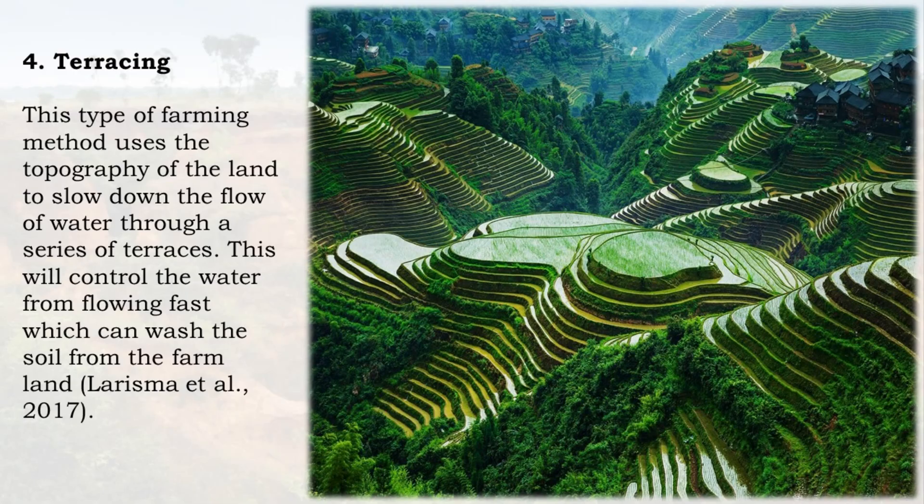4. Terracing: This type of farming method uses the topography of the land to slow down the flow of water through a series of terraces. This will control the water from flowing fast, which can wash the soil from the farmland.